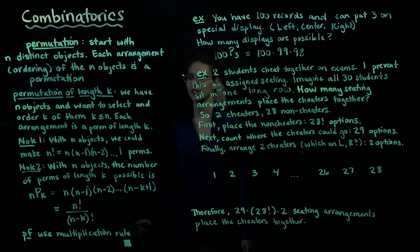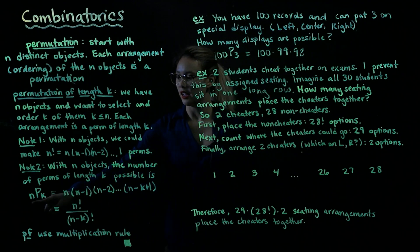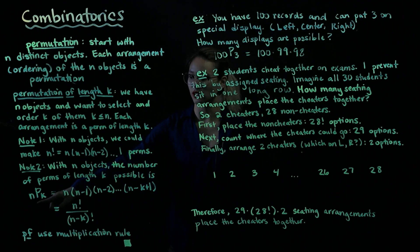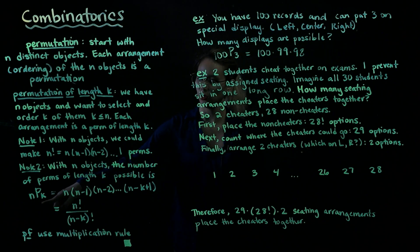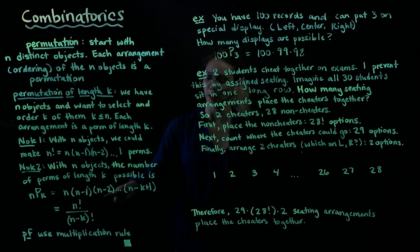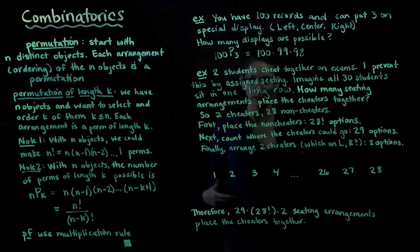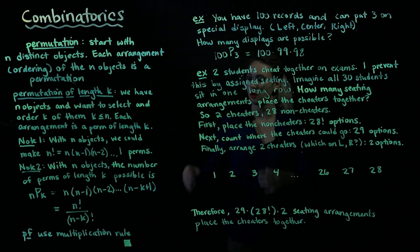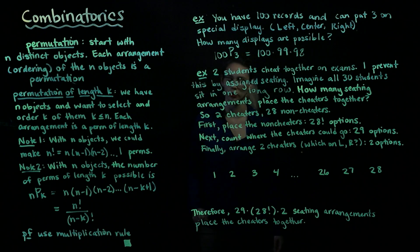Second note is if we start with n objects, the number of permutations of length k that is possible is written n capital P k, so n permute k. What this is equal to is n times n minus 1 times n minus 2 times all the way through to n minus k plus 1. Or if we want to write that more succinctly, we can say n factorial divided by n minus k factorial.